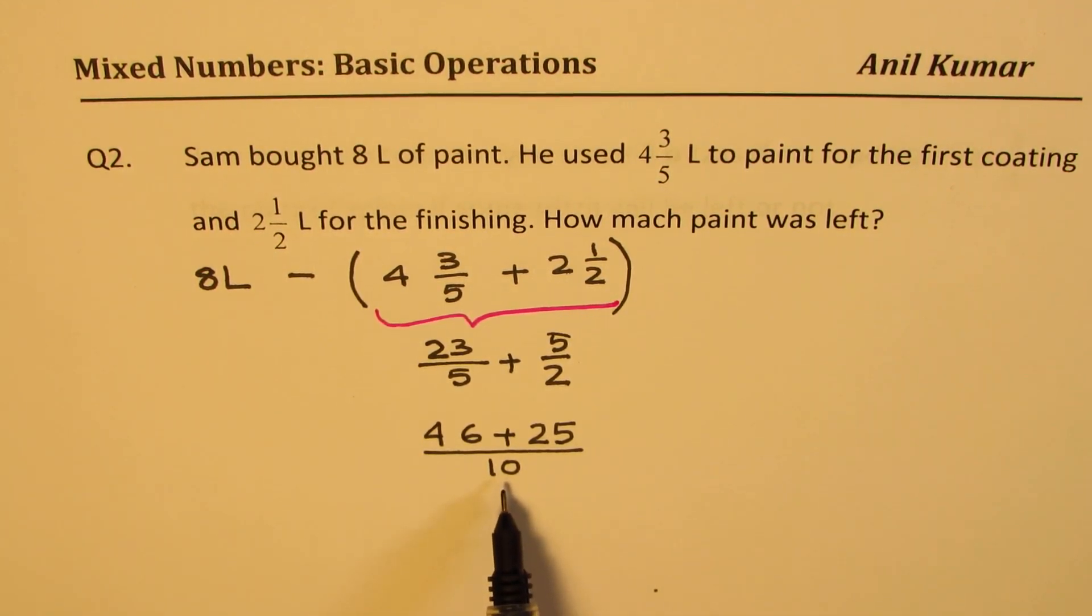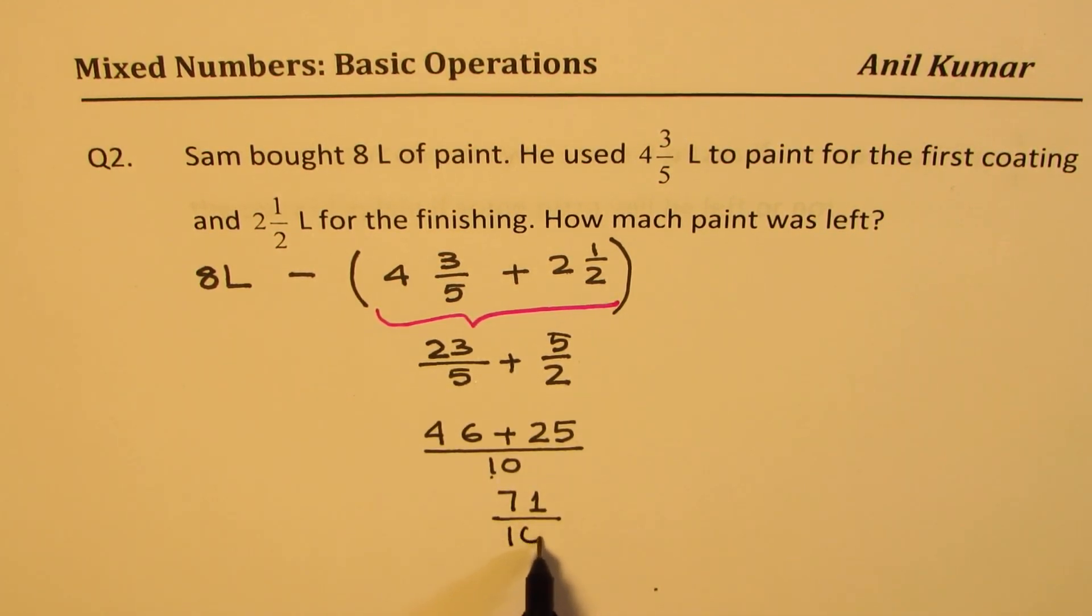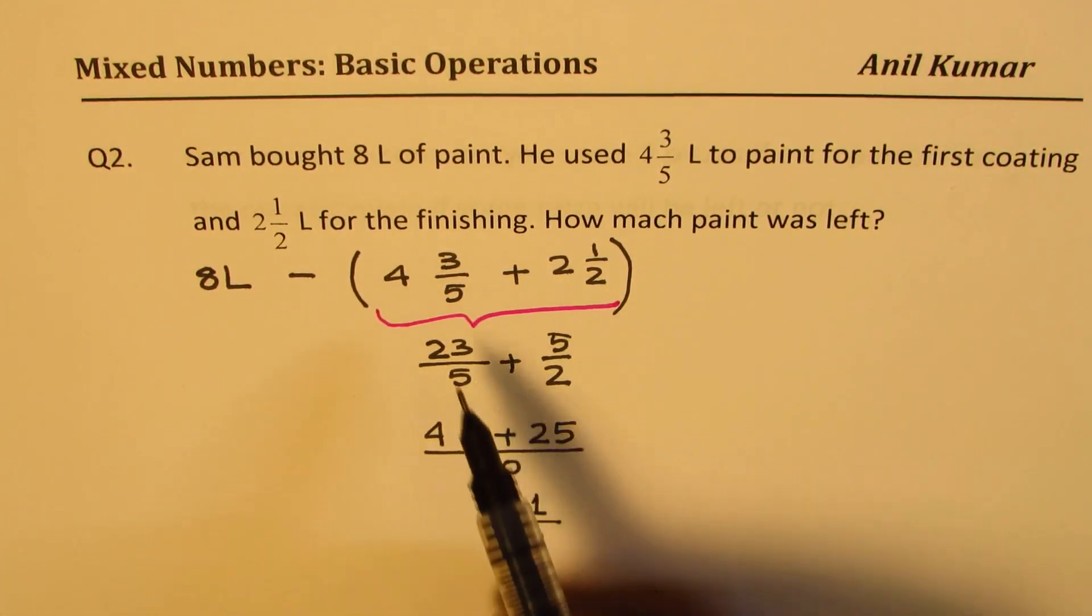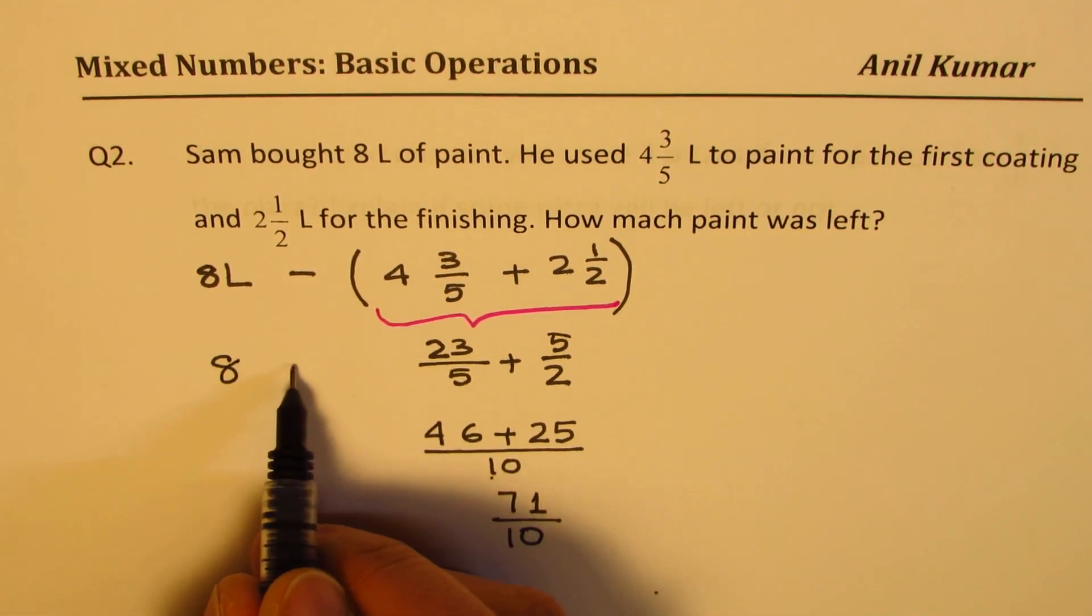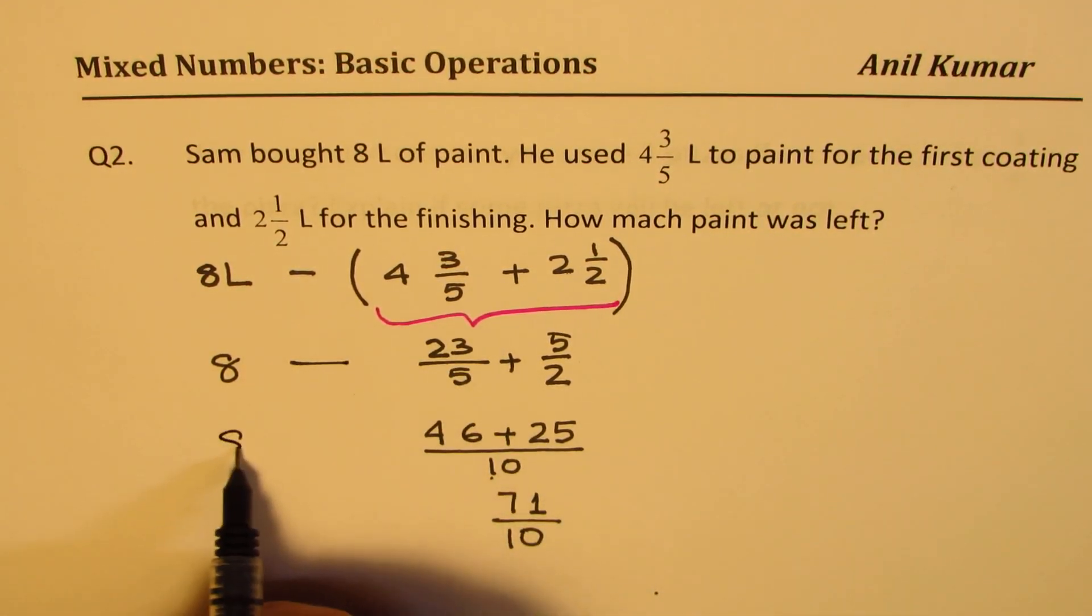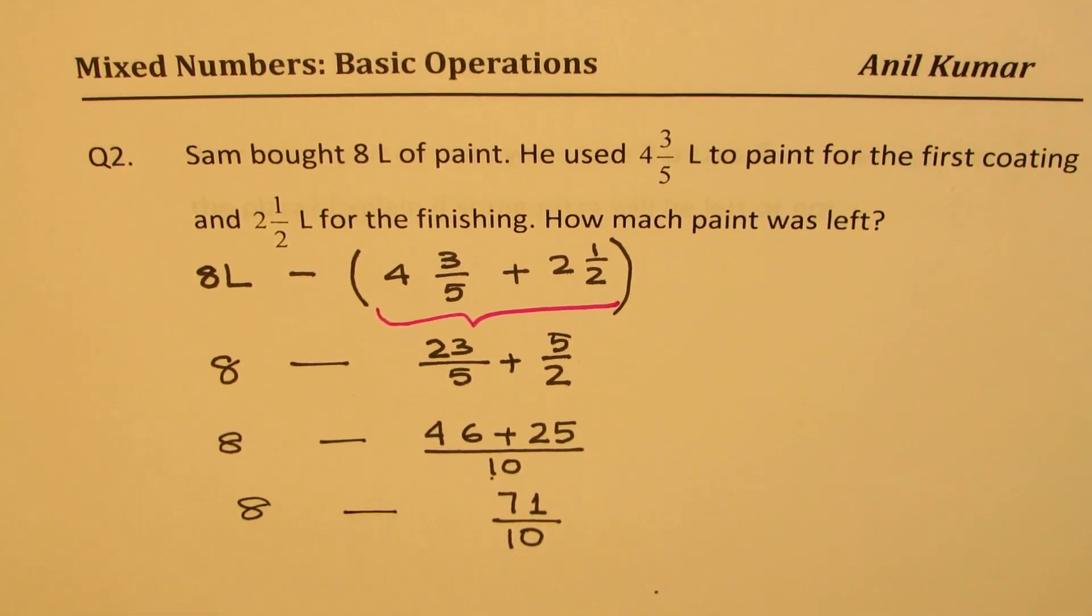Now, you have to multiply 23 and 5 both by 2. 2 times 23 is 46, 2 times 5 is 10. Plus 5 times 5, we also say cross multiply. So we get 46 plus 25. And then we can add them, they have the same denominator, 10. 6 plus 5 is 11, so we get 71 over 10. So 71 over 10 is what this addition equals. We have to take this away from 8 to get our answer.